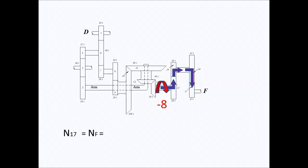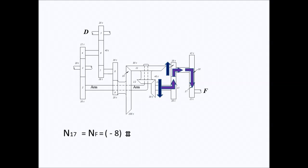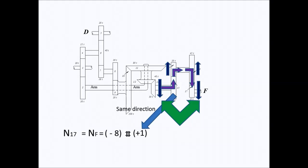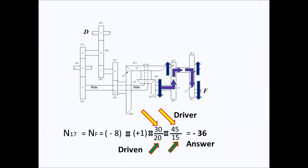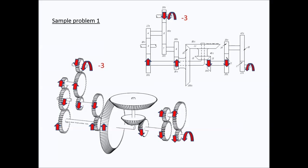Now we analyze Train 3. The number of rotations of F is negative 8 multiplied by positive 1 — because they have the same direction of rotation — multiplied by the number of teeth of the driver over the number of teeth of the driven gears, giving a final answer of negative 36.